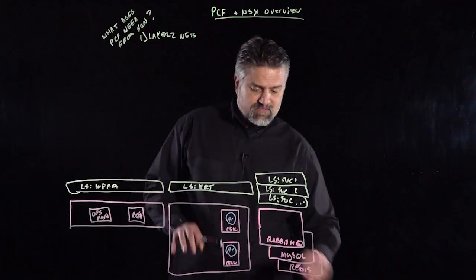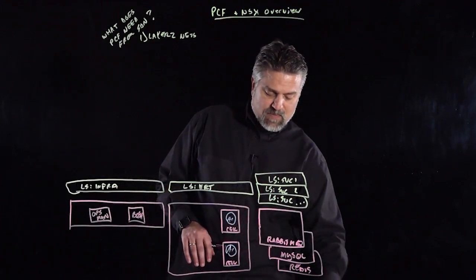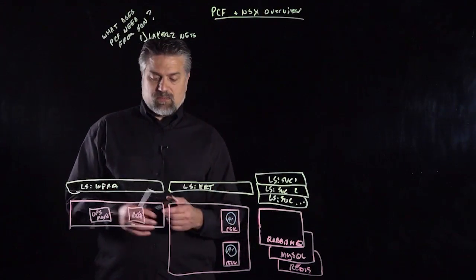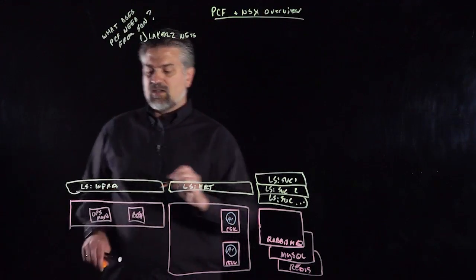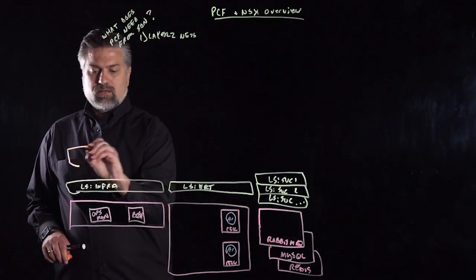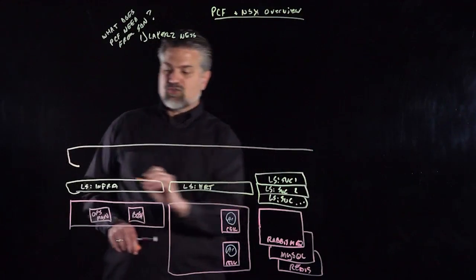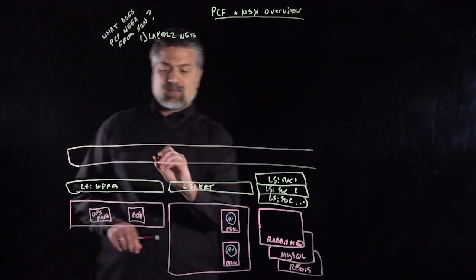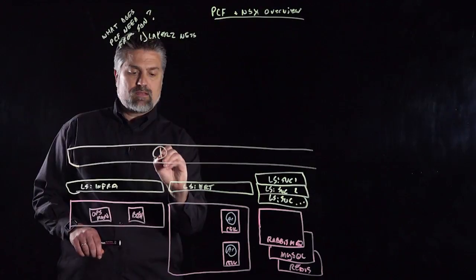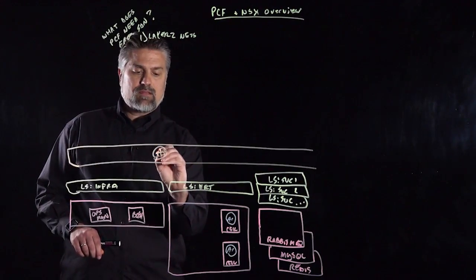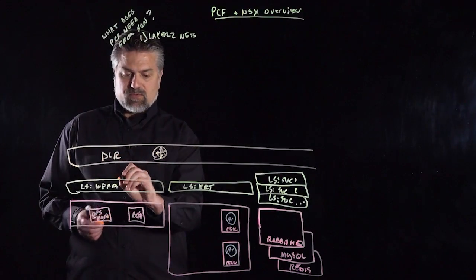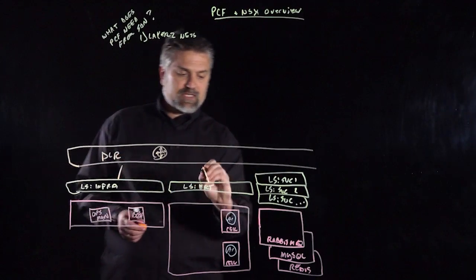This is our Cloud Foundry layout and why we need all these Layer 2 networks. These Layer 2 networks, of course, are going to be routed between each other. So we'll have a Distributed Logical Router component — a DLR — that all of our networks will uplink into.